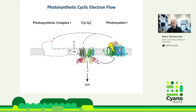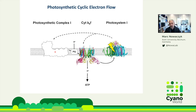Photosynthetic Complex I is structurally and functionally related to Complex I of mitochondria involved in respiratory electron transfer, but there are specific differences. It's present in cyanobacteria because in cyanobacteria you have both processes — respiratory and photosynthetic electron transfer — in one membrane. It was not much known about this complex when we started to work on it. It's a very efficient proton pump, pumping four protons per two electrons.